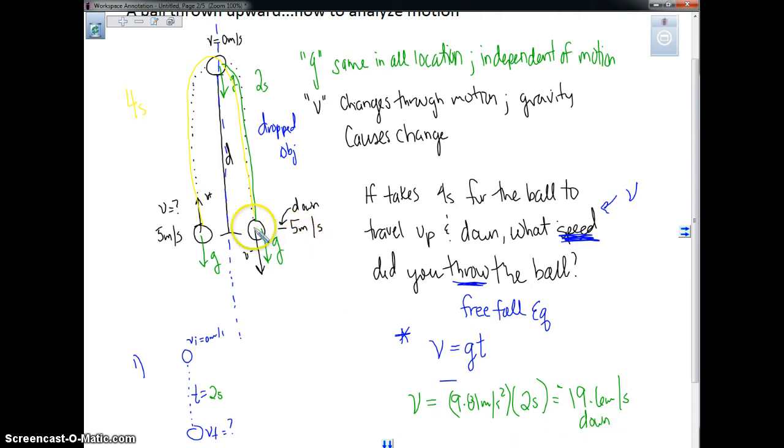However, the question didn't ask for this, it asked for this part right here - how fast must you throw it. Just like I told you before, if this is negative 19, negative just meaning down here, well then we can assume that you had to have thrown it at that same speed like this. Those should have been equal, and that's one way you can technically approach this problem.